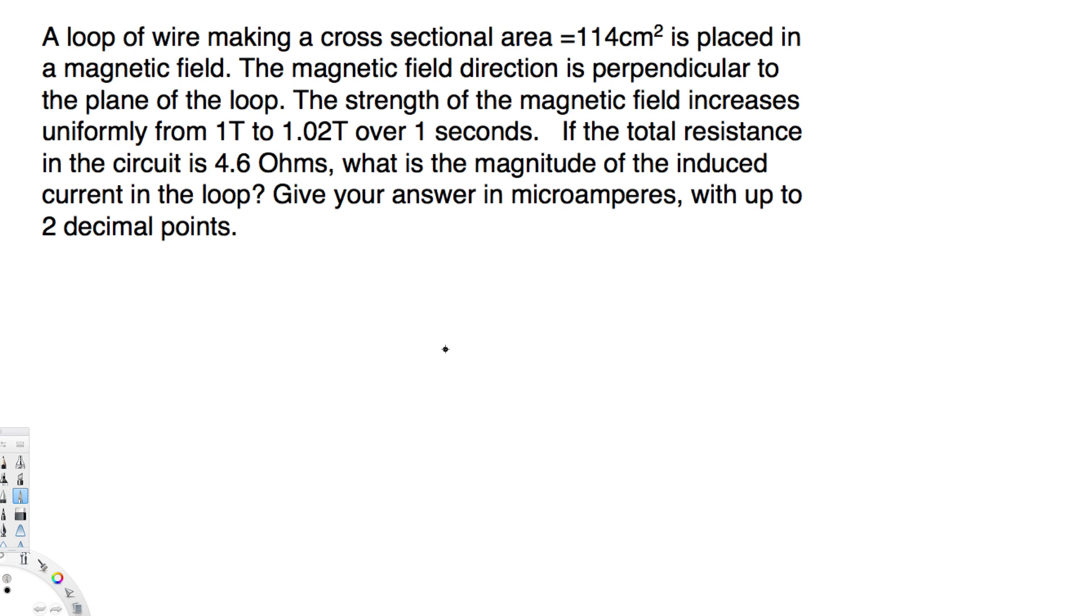Let's look at this problem. A loop of wire making a cross-sectional area 114 centimeter square is placed in a magnetic field. The magnetic field direction is perpendicular to the plane of the loop. The strength of the magnetic field increases uniformly from 1 tesla to 1.02 tesla over 1 second.